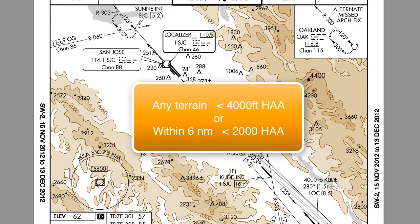So again, if any of the terrain is higher than 4,000 feet above the airport, it'll be shown in brown. Or if any of the terrain within 6 miles of the airport is above 2,000 feet above airport elevation, it will be shown in brown.